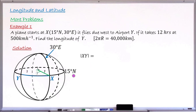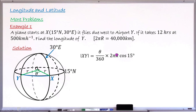The distance traveled is the length of the arc from X to Y. This arc subtends angle theta, and the radius of this latitude is small r. The arc length formula is: (theta/360) × 2π × R × cos(15°), where 15° is the angle of the common latitude. The small r is resolved as R·cos(gamma), where gamma is the angle of the common latitude.